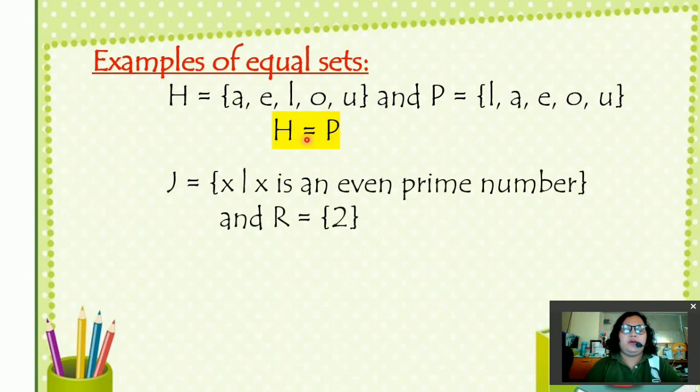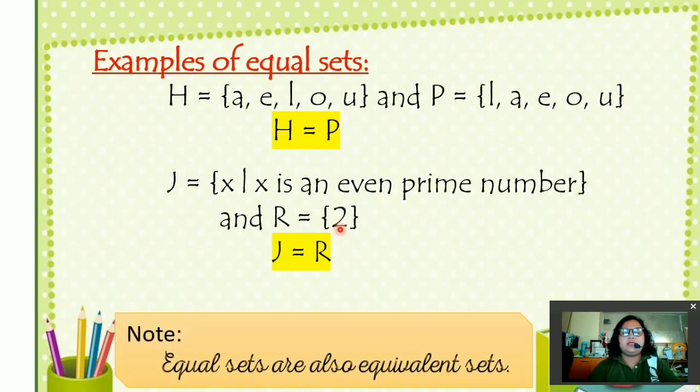Next, we have our set J, X such that X is an even prime number. So the element of set J is 2. And we also have set R equals 2 as its element. So we can say that set J is equal to set R. Take note class, that equal sets are also equivalent sets because the number of elements are equal.